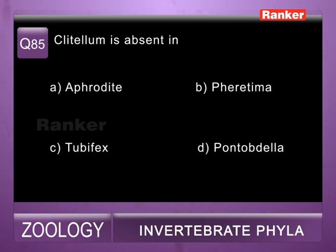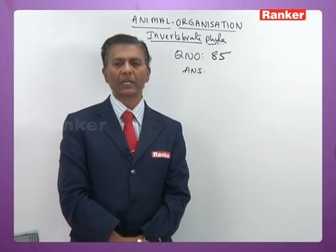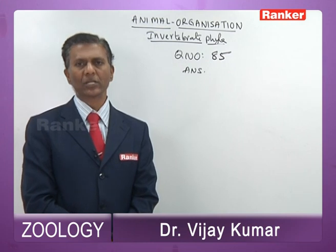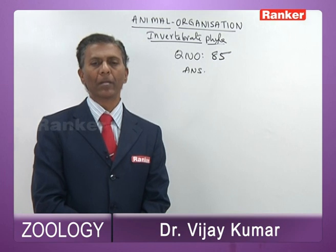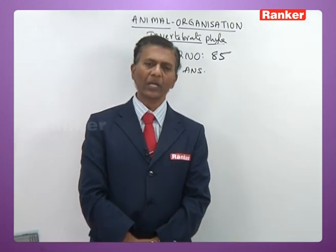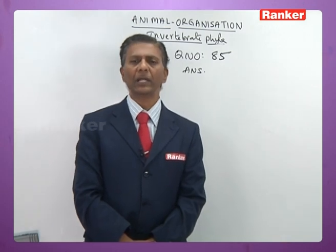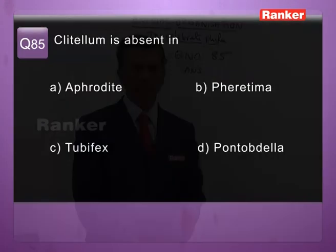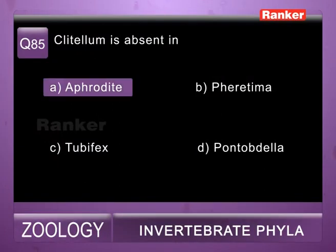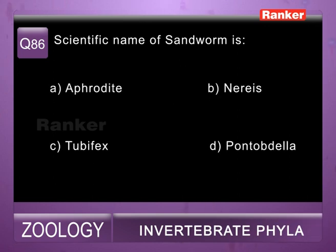Question eighty-five: clitellum is absent in — a) Aphrodite, b) Pheretima, c) Tubifex, d) Pontobdella. Pheretima belongs to Oligochaeta — clitellum present. Pontobdella is a leech (skate sucker) — clitellum present. Tubifex is an oligochaete (blood worm) — clitellum present. Aphrodite is a polychaete commonly called sea mouse — clitellum absent. So eighty-fifth question correct answer is a) Aphrodite.